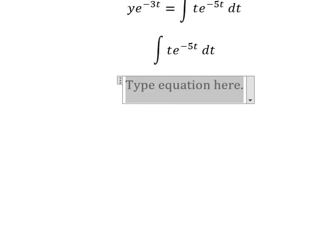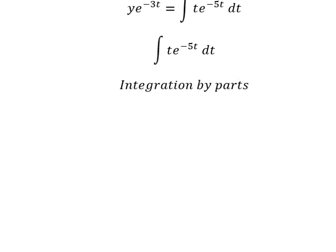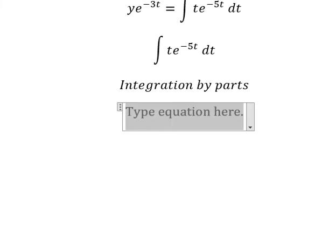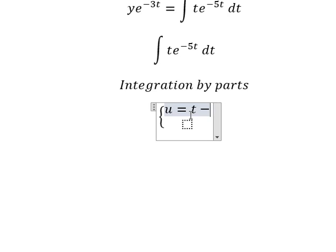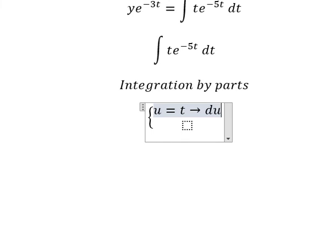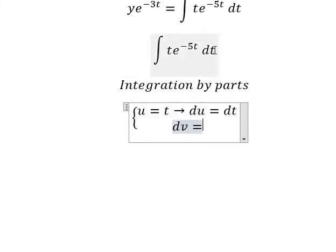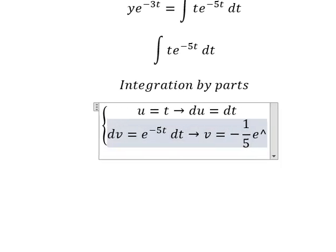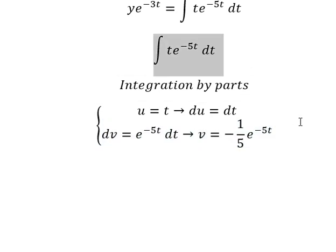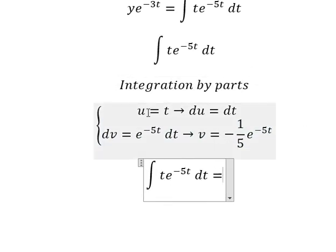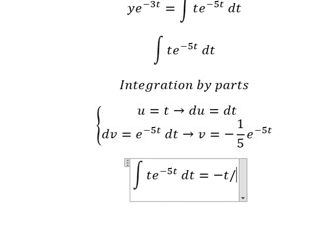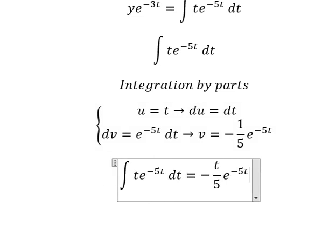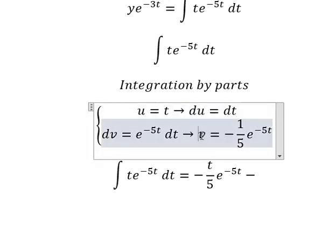We need to use integration by parts. I will set u equals t, then we take the first derivative of both sides and we have du equals dt. For dv, that is e to the power of negative 5t, so the integral gives us negative 1 over 5 times e to the power of negative 5t.